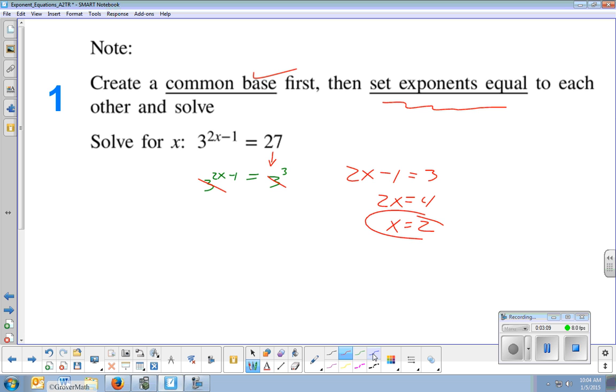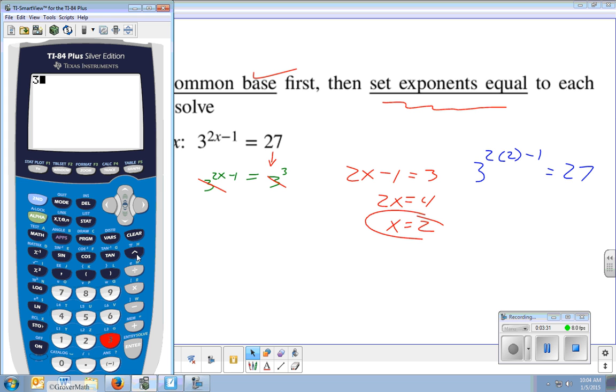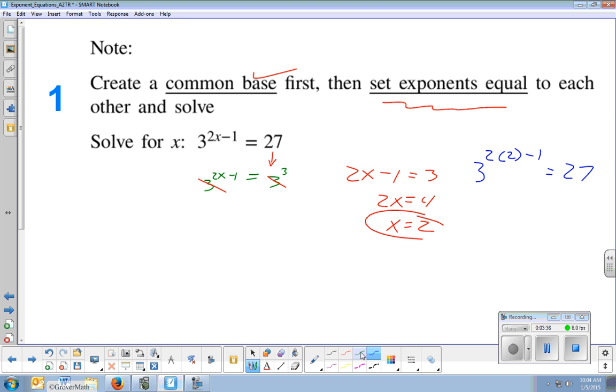And what I like about this topic is it's very easy to check. Almost all math has a way of checking, but some of them are complicated. But this check is very simple. Simply rewrite what you had, but replace x with what you found it to be. And so instead of 2x minus 1, I'm going to write 2 times 2 minus 1 and see if that does equal 27. And your calculator is going to do this work for you. So that is 3 raised to the... Now you should simplify this here, though. 2 times 2 is 4, and 4 minus 1 is 3.